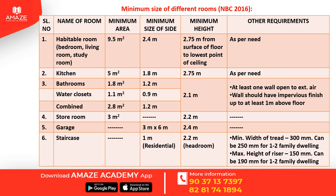Now for the kitchen: minimum area is 5 square meters, minimum width is 1.8 meters, and minimum height is the same as a habitable room — 2.75 meters. For bathrooms: minimum area is 1.8 square meters, minimum width is 1.2 meters, and minimum height is 2.1 meters.